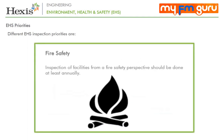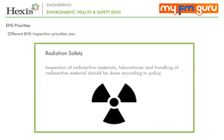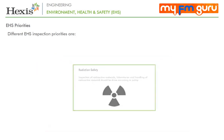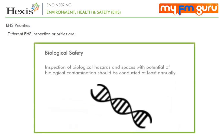EHS inspection priorities include: Fire Safety — inspection of facilities from a fire safety perspective should be done at least annually; Chemical Safety — inspection of use of chemicals and spaces where chemicals are used should be done at regular frequency; Radiation Safety — inspection of radioactive materials, laboratories and handling of radioactive material should be done according to policy; Workplace Safety — areas under the hazards management plan should be monitored according to policy; and Biological Safety — inspection of biological hazards and spaces with potential biological contamination should be conducted at least annually.